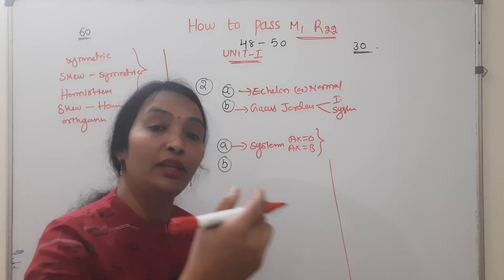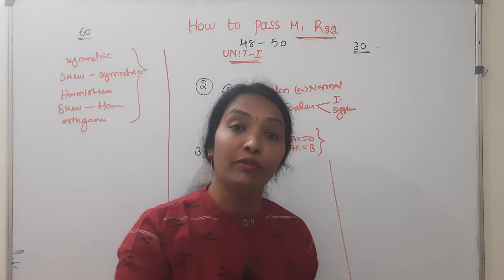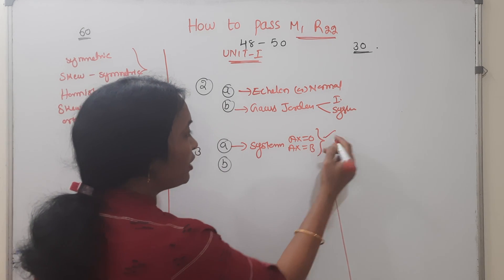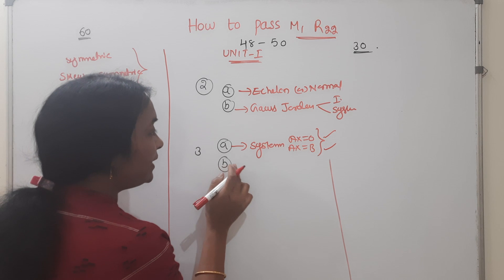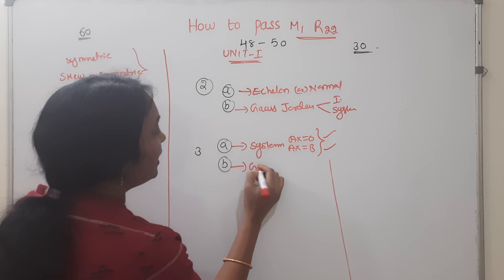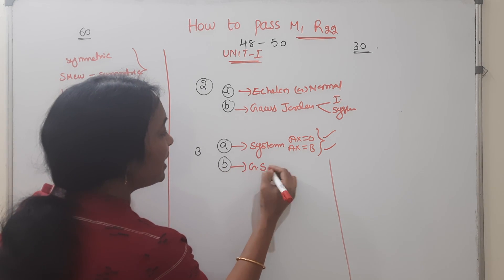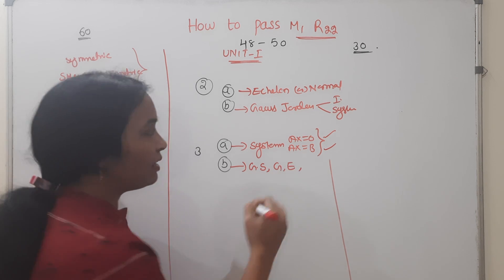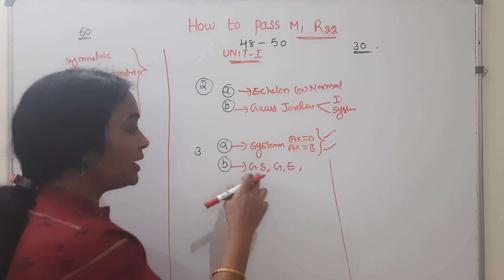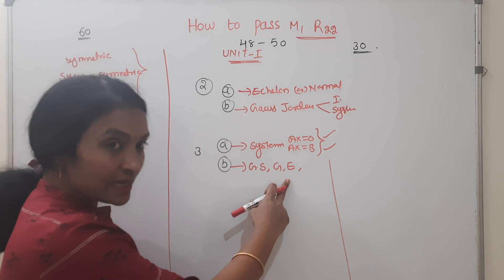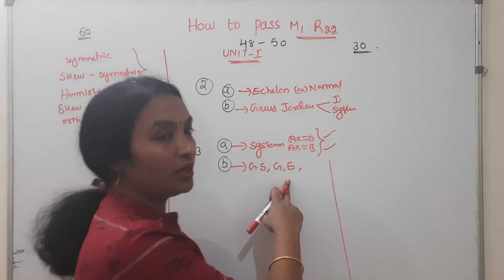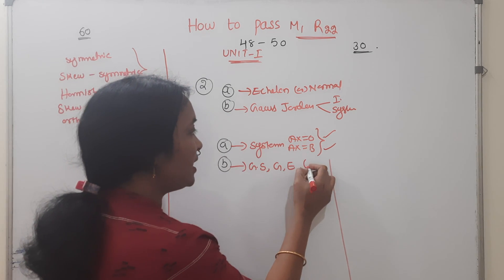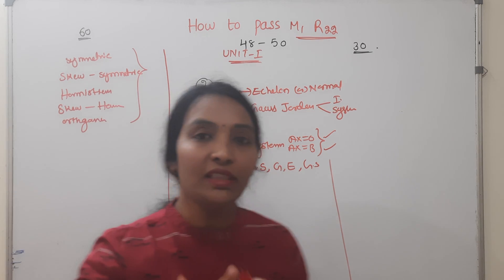That means consistent, inconsistent, unique solution, infinite solution — these are the problem types. Gauss-Seidel and Gauss elimination methods are also covered. Gauss-Jordan appears here as well. The first unit covers: echelon form, Gauss-Jordan, and system of equations.